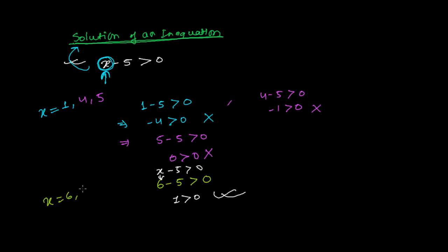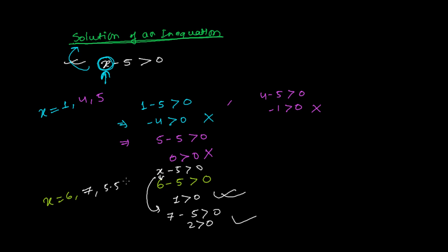What about x equals to 5.5 or 7? If x is replaced by 7, then 7 minus 5 is greater than 0, that is 2 is greater than 0 — that's absolutely right. If I am putting 5.5, then 5.5 minus 5 is greater than 0, which gives 0.5 is greater than 0 — that's right.